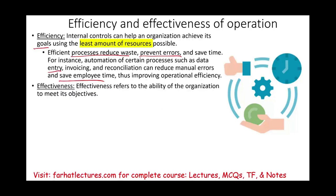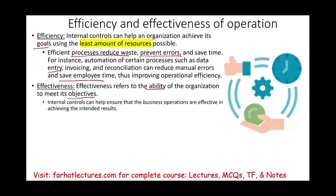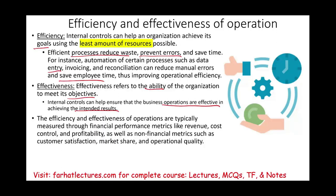Effectiveness refers to the ability of the organization to meet its objectives — achieving the intended result. Efficiency and effectiveness are measured through performance metrics like revenue, cost control, and profitability, as well as non-financial metrics such as customer satisfaction, market share, and operational quality. Again, the auditor looks at this only in relation to how it affects financial reporting.